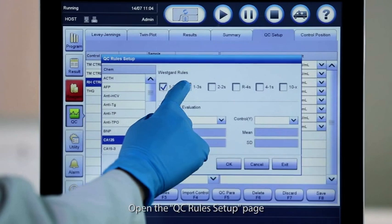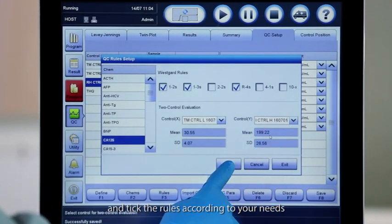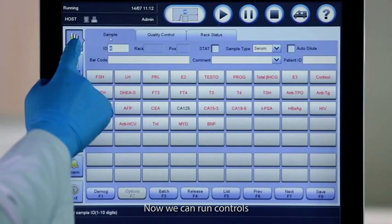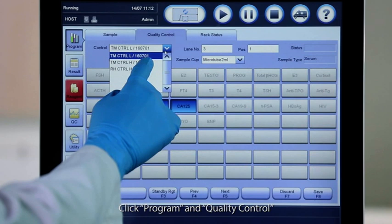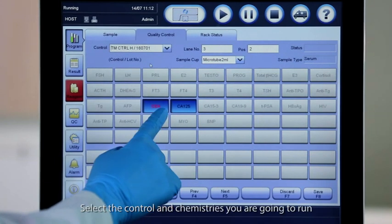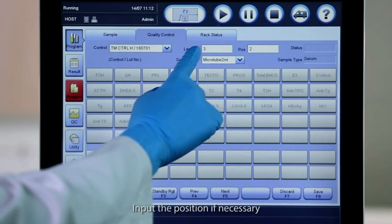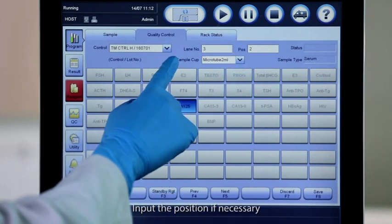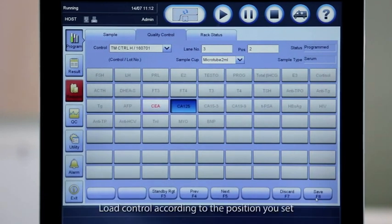The software allows you to set up QC rules. Open the QC Rules Setup page and tick the rules according to your needs. Now we can run controls. Click Program and Quality Control. Select the control and chemistries you are going to run. Input the position if necessary. Choose the sample cup type used. Load control according to the position you set. Click Start button to run.